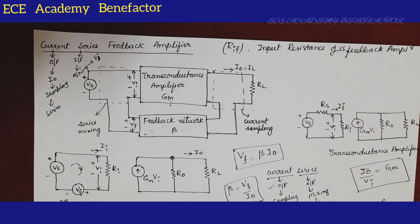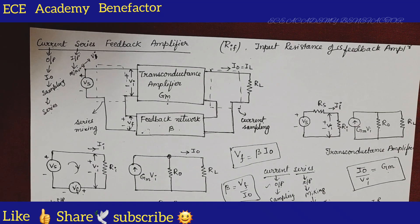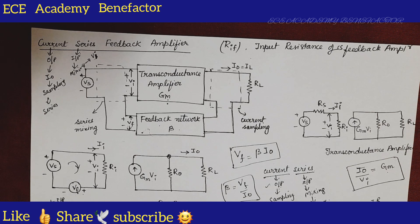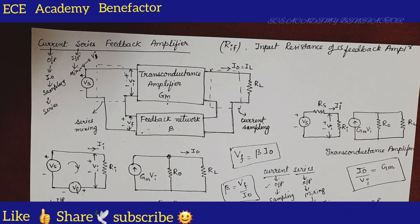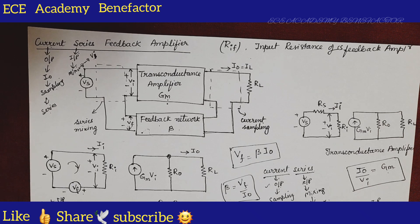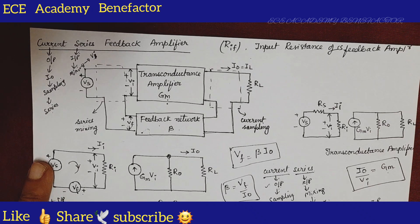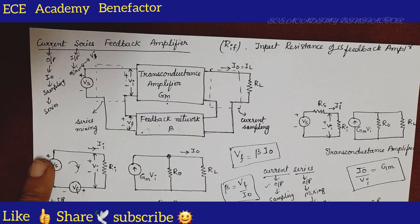Hello, dear students. Welcome to ECE Academy. In this class we will be seeing the derivation of ROF of current series feedback amplifier. ROF stands for output resistance with feedback. Before starting the derivation of ROF, let us quickly understand how to draw the block diagram and its equivalent circuit of current series feedback amplifier, which we have already completed in our previous class for deriving Rif.